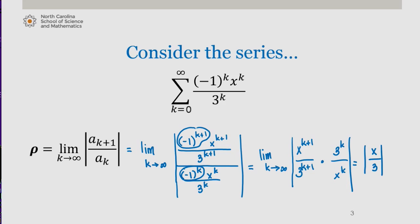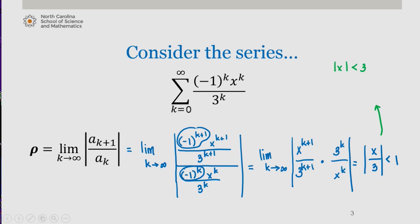The ratio test tells us that the series converges if rho is less than 1. So this series converges for the absolute value of x divided by 3 being less than 1, which means the absolute value of x is less than 3. This means that our radius of convergence is 3. Since we're looking at this series generated about x equals 0, the radius around 0 at which we converge is 3.